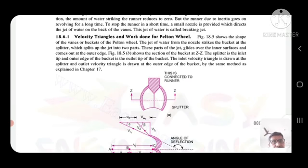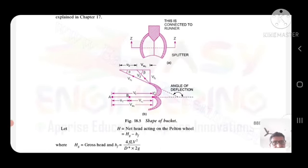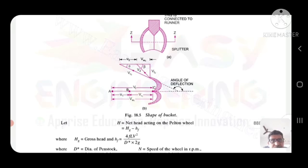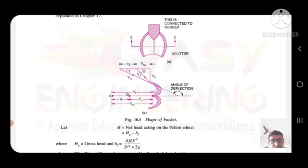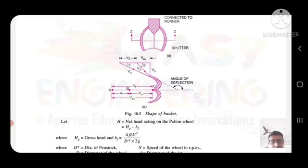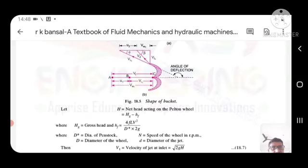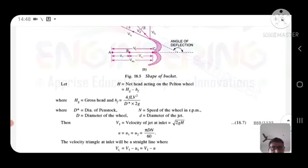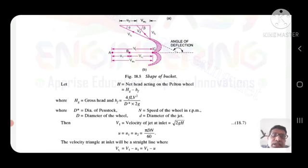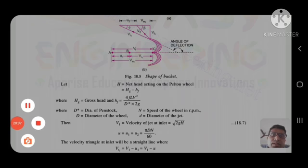Velocity triangle and work done of a Pelton wheel: the inlet velocity triangle and exit velocity triangle are shown. The net head acting on a Pelton wheel is H = Hg − HF, where Hg is the gross head and HF = 4fLV²/2gD. D is the diameter of the penstock, n is the speed of the wheel in RPM, D is the diameter of the wheel, and d is the diameter of the jet. The jet velocity V1 = √(2gH), and the peripheral velocity U = U1 = U2 = πDN/60.